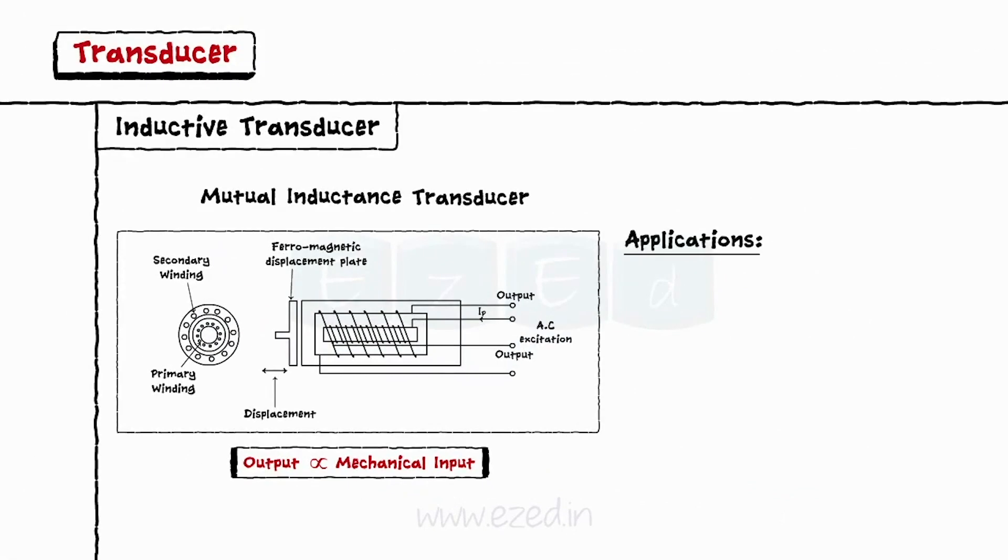The common examples of inductive transducers are metal detectors, distance measurement, etc.